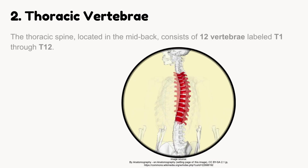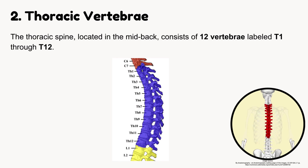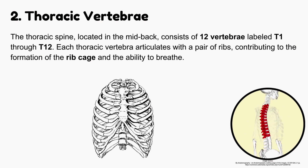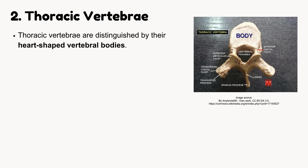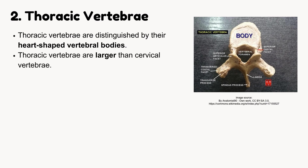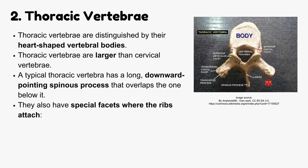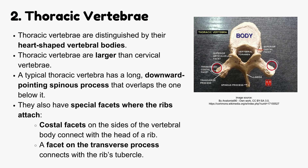Thoracic vertebrae. The thoracic spine, located in the mid-back, consists of 12 vertebrae labeled T1 through T12. Each thoracic vertebra articulates with a pair of ribs, contributing to the formation of the rib cage and the ability to breathe. Thoracic vertebrae are distinguished by their heart-shaped vertebral bodies, which are larger than cervical vertebrae. A typical thoracic vertebra has a long, downward-pointing spinous process that overlaps the one below it. They also have special costal facets on the sides of the vertebral body connecting with the head of a rib, and a facet on the transverse process connecting with the rib's tubercle.